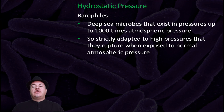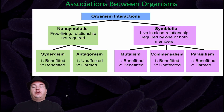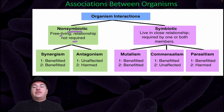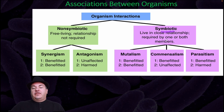Barophiles are so strictly adapted to high pressures that they rupture when exposed to normal atmospheric pressure. Microbial associations can be defined as non-symbiotic, where organisms are free-living and a relationship is not required, or symbiotic, where organisms live in a close relationship required by one or both members. Among symbiotic organisms, you can have mutualism, where both organisms benefit; commensalism, where one is benefited and the other is unaffected; or parasitism, where one is benefited and the other is harmed.